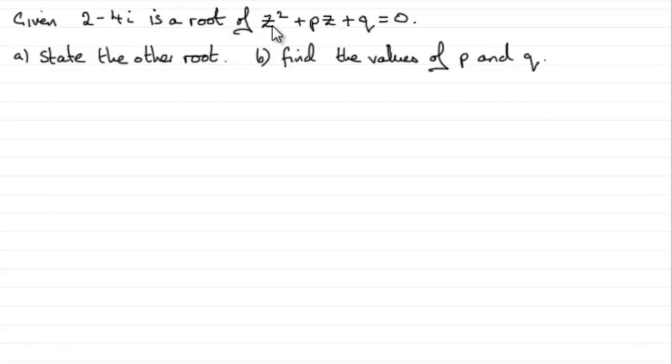Now because there's no i's in the equation here, if we're told that z equals 2 minus 4i, the other root must be what is called the complex conjugate of this. And that is that we just switch the sign here on the imaginary part. So the other root will be 2 plus 4i.